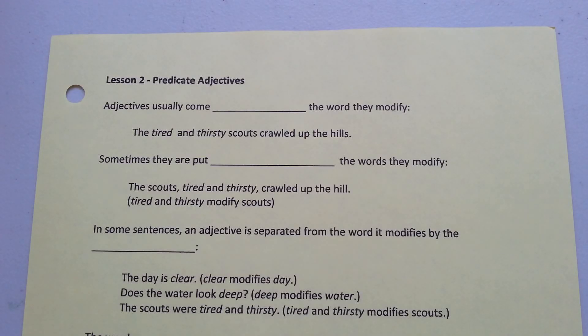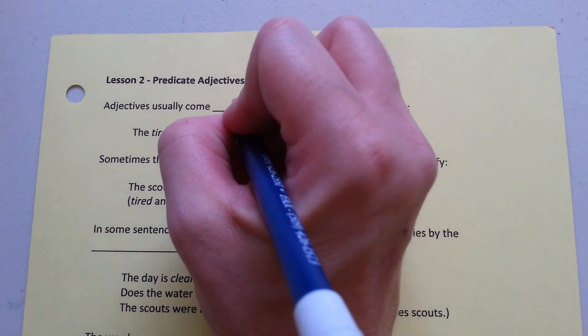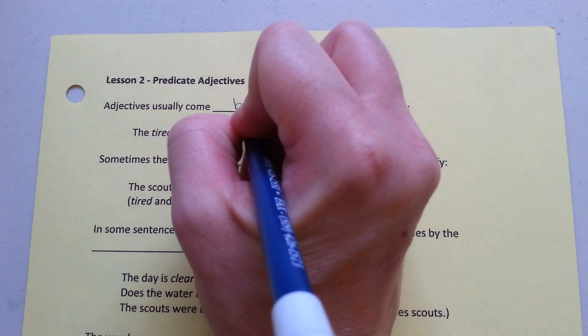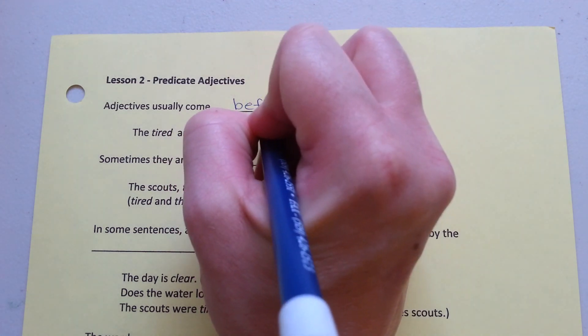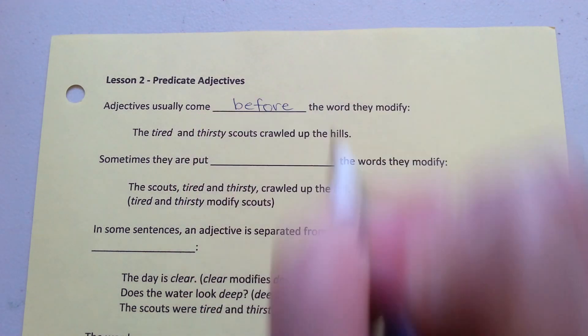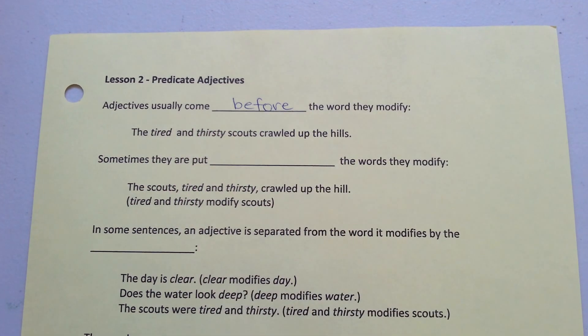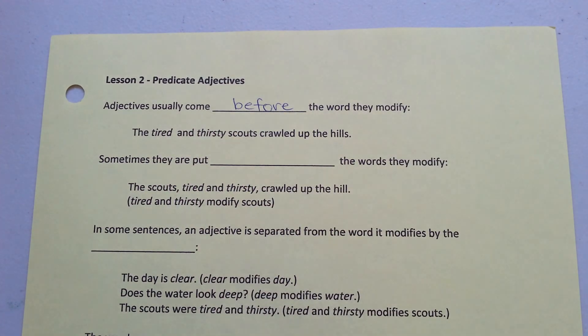Lesson 2: Predicate Adjectives. Adjectives usually come before the word they modify. For example: 'The tired and thirsty scouts crawled up the hills.'